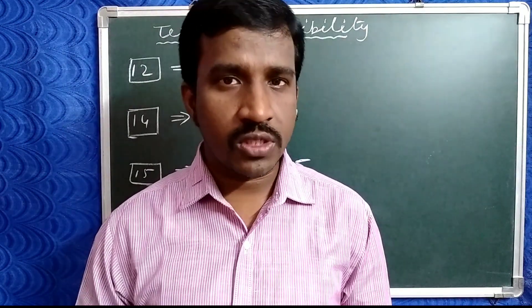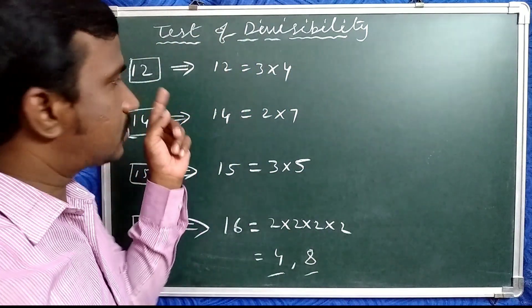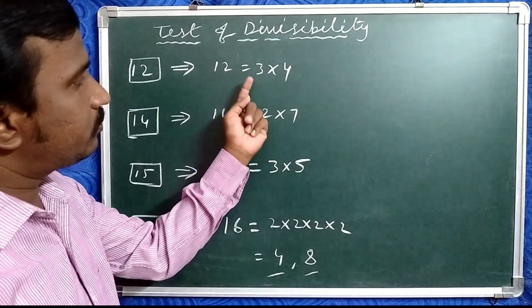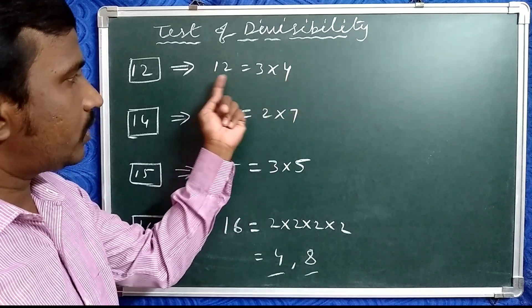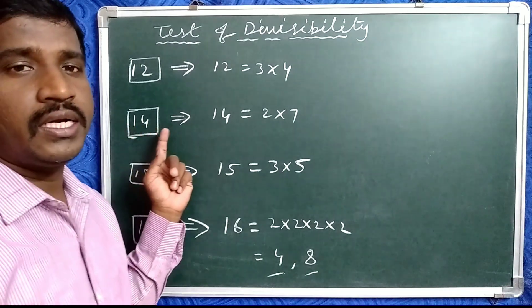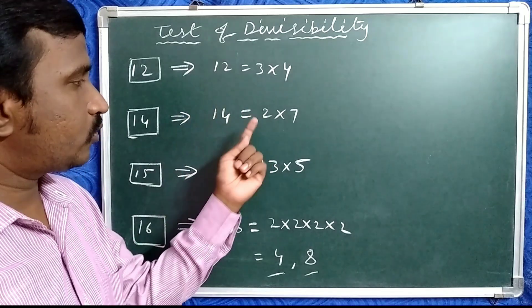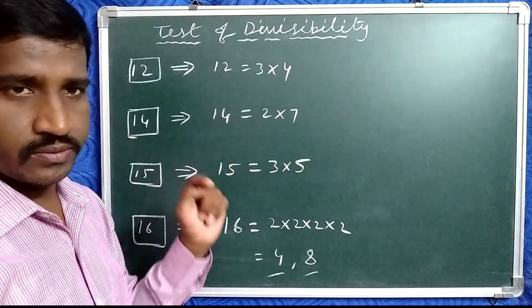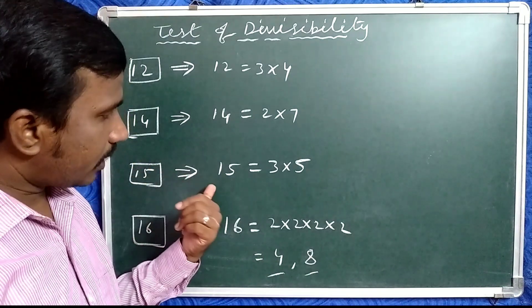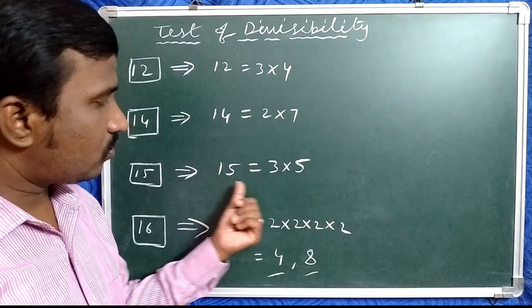Now check divisibility rules for composite numbers. If a number is exactly divisible by 12, that number is exactly divisible by 3 and 4, because 12 equals 3 times 4. If a number is exactly divisible by 14, it is divisible by 2 and 7, because 14 equals 2 times 7. If a number is exactly divisible by 15, it is divisible by 3 and 5, because 15 equals 3 times 5.